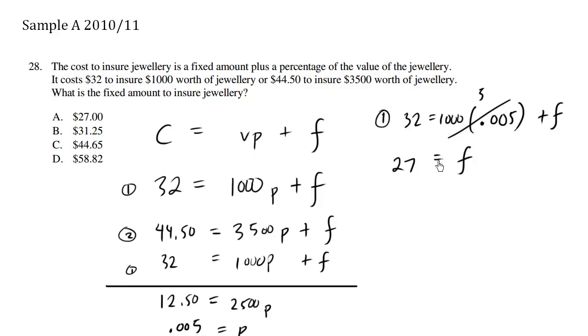So the fixed cost to insure the jewelry is going to be $27. Choice A is correct.